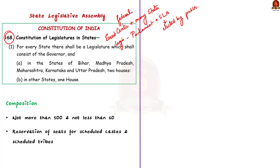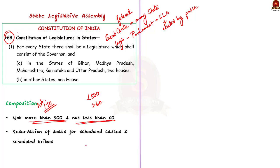Article 168 of the Constitution provides for a legislature in every state, made up of members directly elected by the people. As per Article 170, the Legislative Assembly of each state cannot have more than 500 members and less than 60 members. After each census, a readjustment is made in the total number of seats. The Constitution also provides for reservation of seats for scheduled castes and scheduled tribes in the Legislative Assembly on the basis of population ratios.